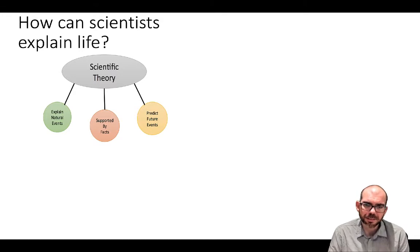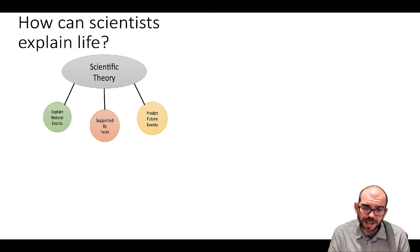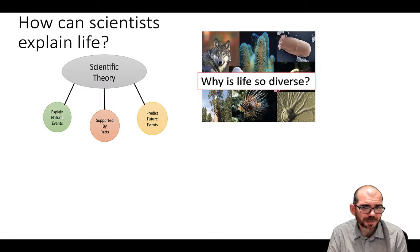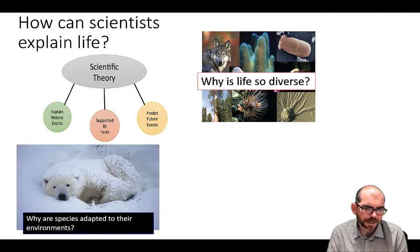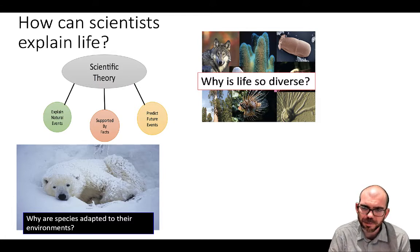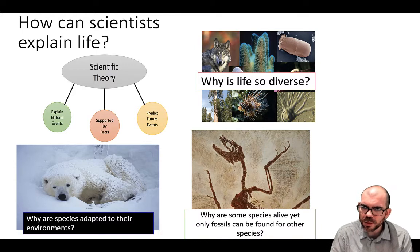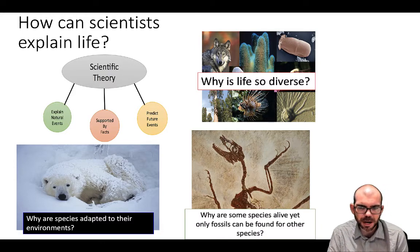So how can scientists explain life? Within science, scientists form scientific theories and test them to see if they're able to explain natural events, if there's evidence supporting them, and if they're able to predict future events. In biology, questions we want to answer are things like: why is life so diverse? Why so many different species on Earth? Why does it appear that species are perfectly adapted to their environments? And why is it that some species are alive today — referred to as extant — but other species are extinct? What could explain why some make it and some don't?